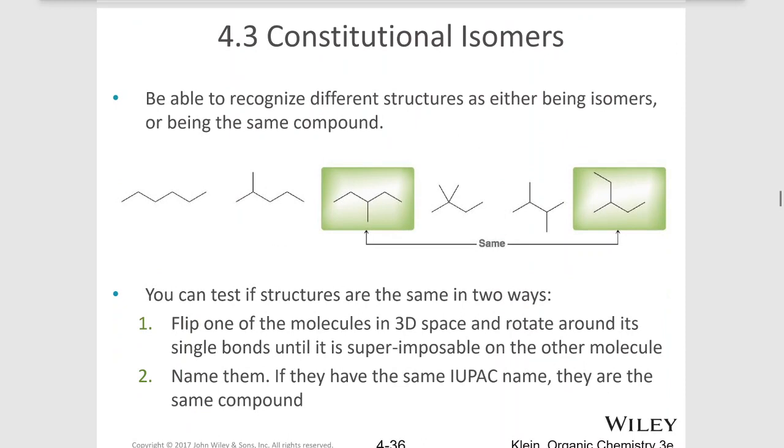To be able to recognize isomers versus the same compound, one way to do that is to try to flip them around in space and see if you can put them back on top of each other. And this is where a model kit will prove especially helpful. But another way to do it is to simply name them. If the molecules have exactly the same name, then they're the same compound.